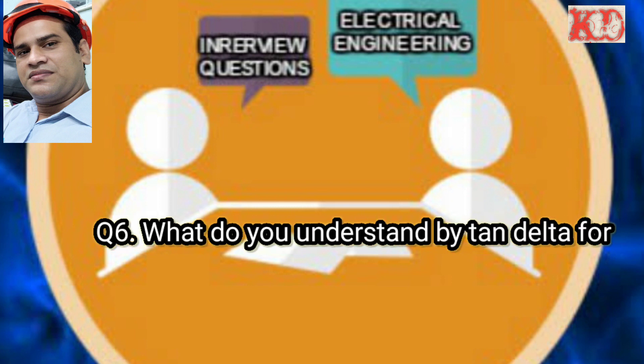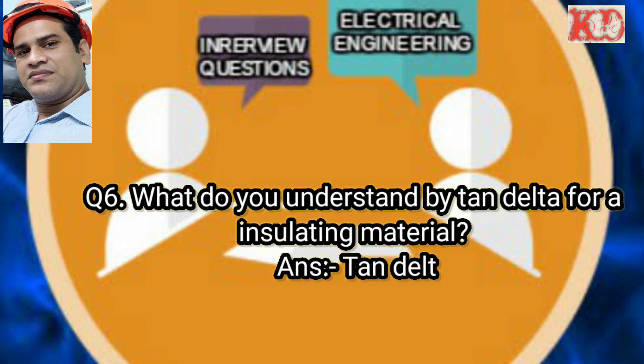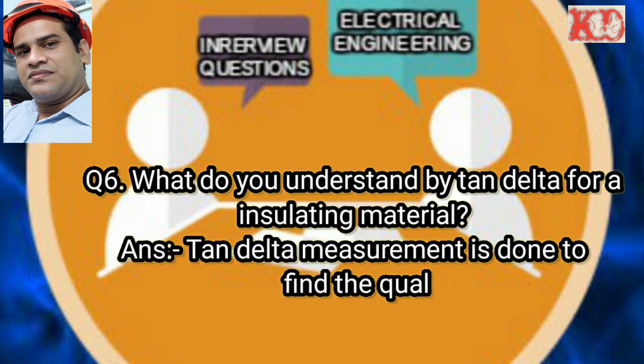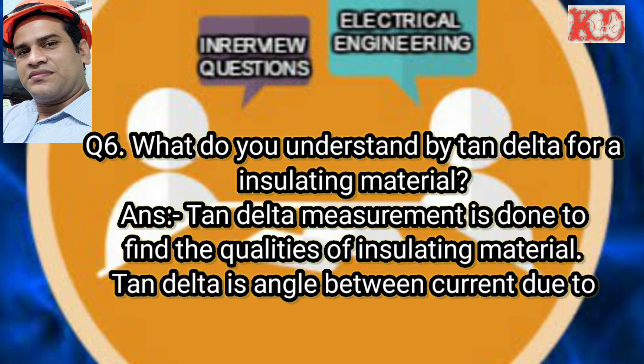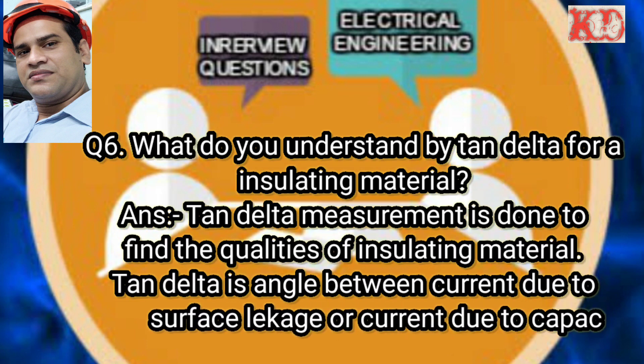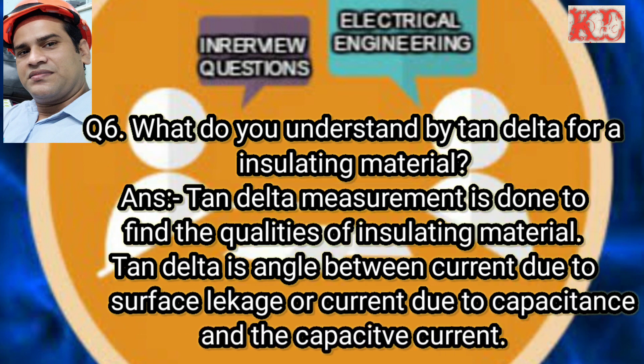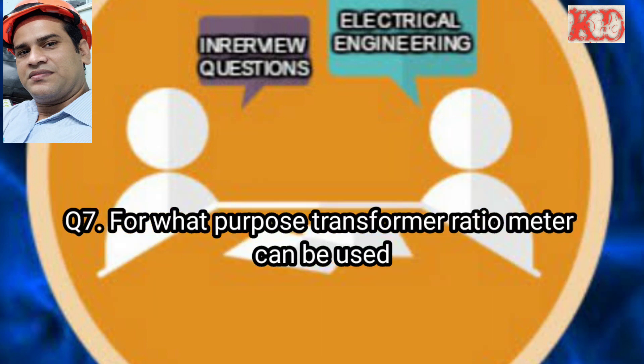Question number six: What do you understand by tan delta for insulating materials? Answer: Tan delta measurement is done to find the quality of insulating materials. Delta is the angle between the current due to surface leakage and the capacitive current. Tan delta equals IR divided by IC.